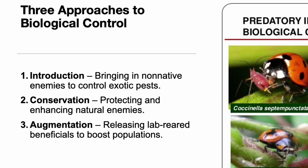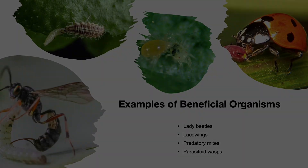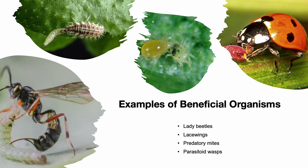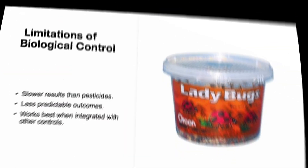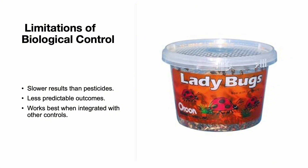There are three types of biological control: introduction of non-native enemies for exotic pests; conservation of existing natural enemies through habitat support and limiting pesticide use; and augmentation, which involves releasing beneficials like ladybugs or parasitoid wasps into the landscape. Examples of beneficial organisms include ladybugs, lacewings, predatory mites, and parasitoid wasps. Biological control tends to be slower and less predictable than chemical control — while pesticides may work in hours, biological methods often take days or weeks. Still, they offer long-term, environmentally friendly pest suppression.